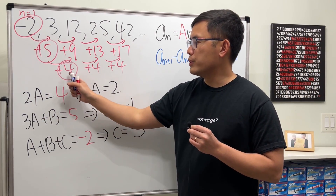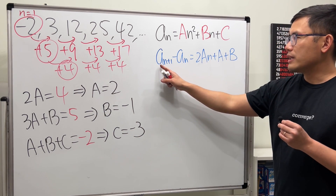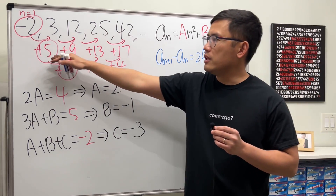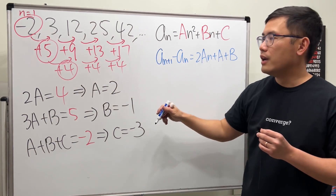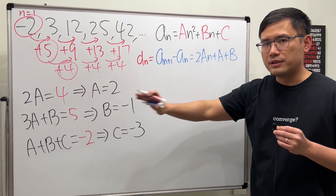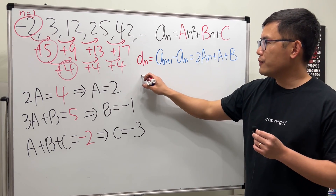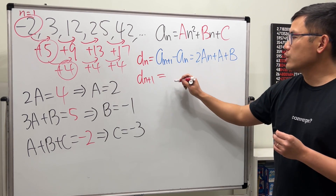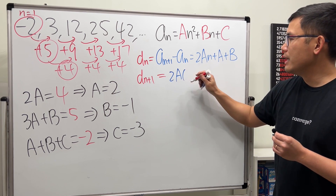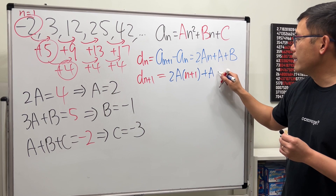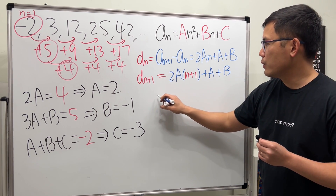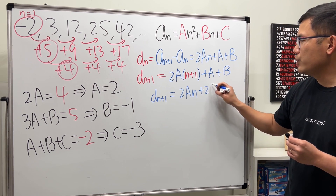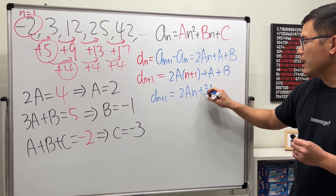Why do we set 2a equal to the second difference? We saw that a_{n+1} minus a_n gives the first difference sequence d_n, which equals 2an plus a plus b. Now finding d_{n+1}: substituting n+1 gives 2a(n+1) plus a plus b, which equals 2an plus 2a plus a plus b, or 2an plus 3a plus b.